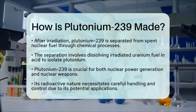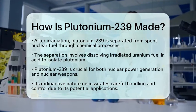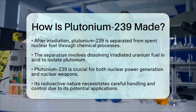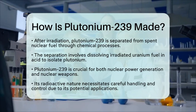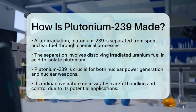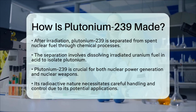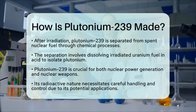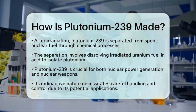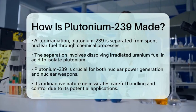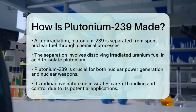In summary, Plutonium-239 is made through neutron capture in Uranium-238, followed by two beta decays. This process occurs in nuclear reactors, and the Plutonium-239 is then chemically separated for various uses. Understanding this process is essential in the context of chemistry education and the standards set by the International Union of Pure and Applied Chemistry.